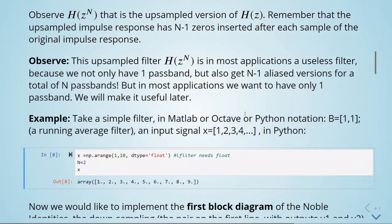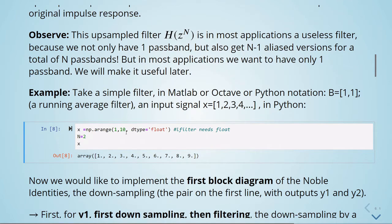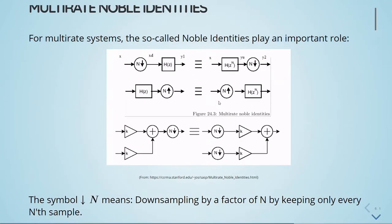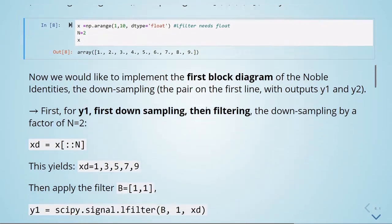In Python, we define this array of numbers and set the downsampling factor as n equals two. We want to implement the first block diagram of the Noble identities — the downsampling pair. For y1, this is first downsampling and then filtering. The downsampling by a factor of n equals two is done using Python indexing, keeping just every nth sample.